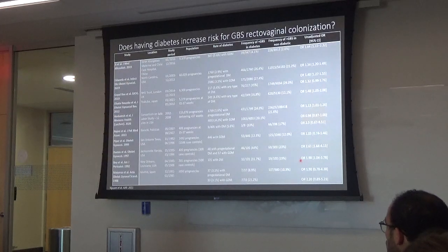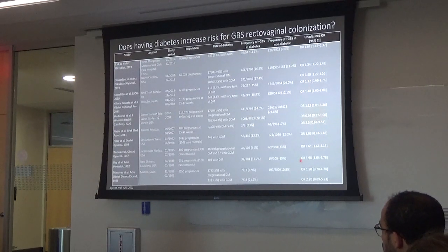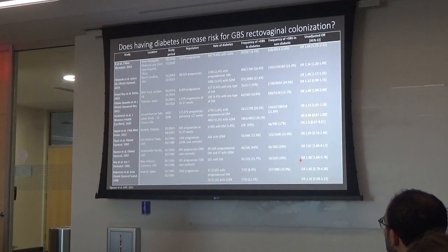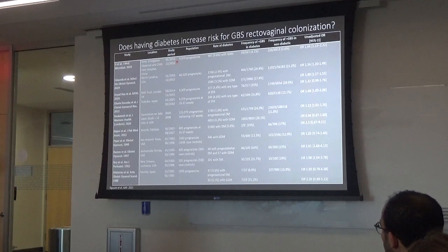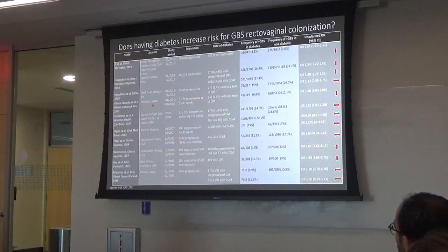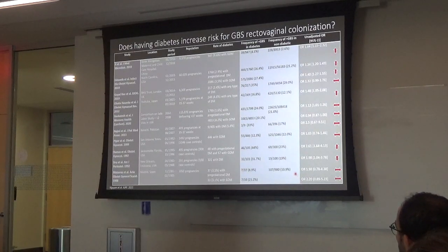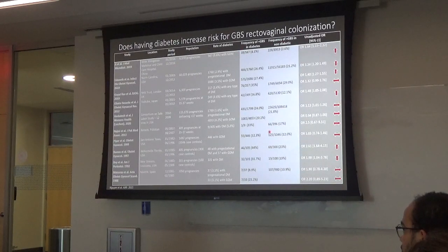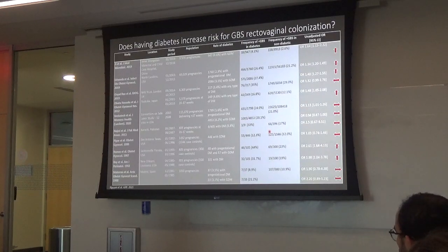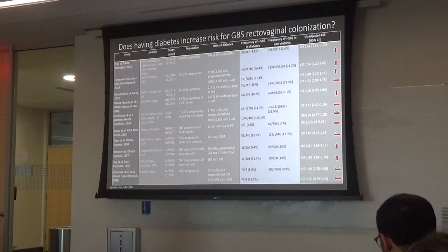We did a study asking: does having diabetes increase your risk of carrying GBS late in pregnancy? We found studies ranging from the 1980s to the late 2010s across very different populations — from Inner Mongolia, China, and Pakistan to different U.S. populations. When we looked at GBS-positive frequency late in pregnancy, women with pre-gestational or gestational diabetes showed that having diabetes, which lowers your immune system, puts you at higher risk for GBS colonization — though there's a lot of noise in the data with carriage rates ranging from 4% to 30%.